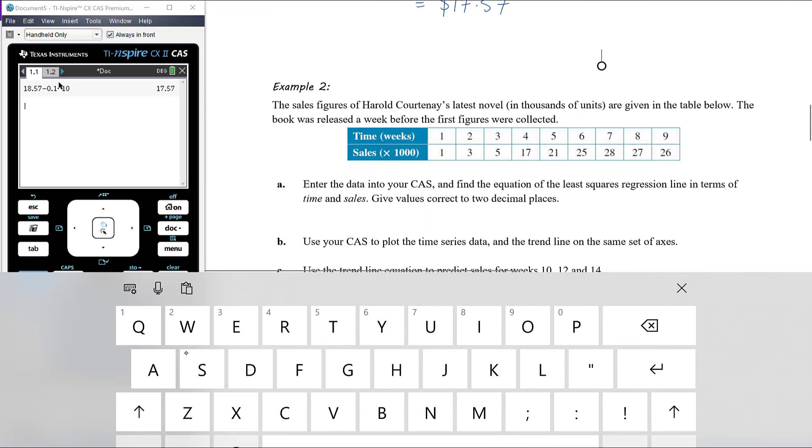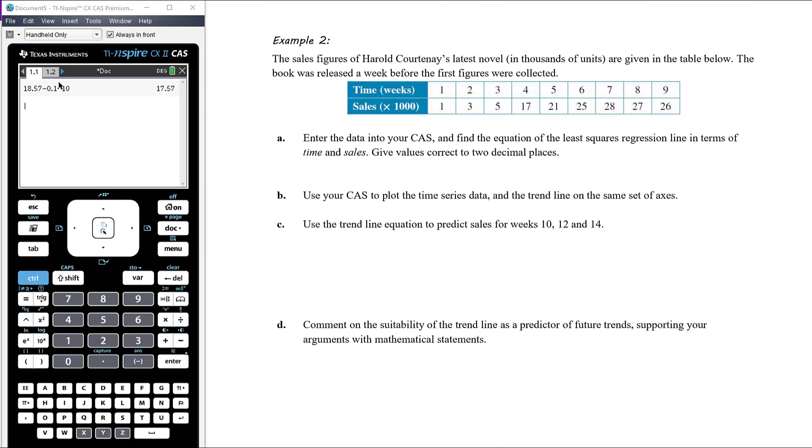Let's have a look at the second example. So we've got a data set here. Sales figures of Harold Courtney's latest novel, in thousands of units, are given in the table below. The book was released a week before the first figures were collected. So time in weeks, so one week, after one week, one week since the book was released, the sales are 1,000. Two weeks after the book was released, the sales are 3,000. Three weeks after the book was released, the sales are 5,000. Four weeks, the book's got some traction, there's been some reviews published, whatever, the sales are now 17,000 in that week. So they're not cumulative sales, it is in week one we sold 1,000 books. In week four we sold 17,000 books.